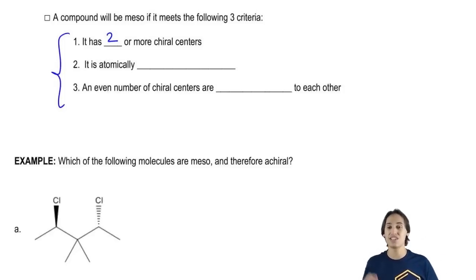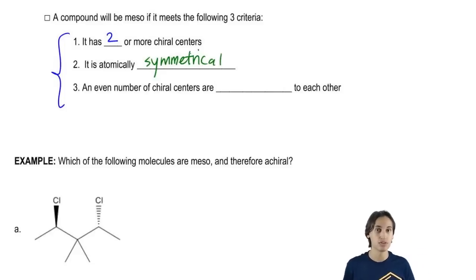The second criteria is that it has to be atomically symmetrical. Now this is actually really tricky to communicate because what that doesn't mean is perfectly symmetrical. It just means that everything has to be connected in the same way on both sides. Even if wedges and dashes don't match up, that's okay. I just need the atoms to be in place symmetrically.